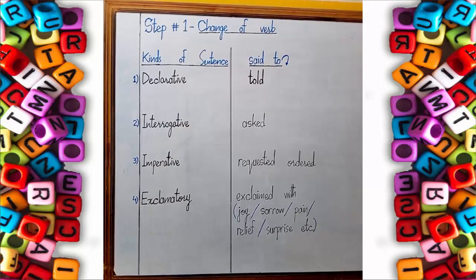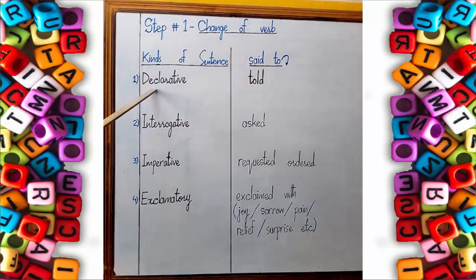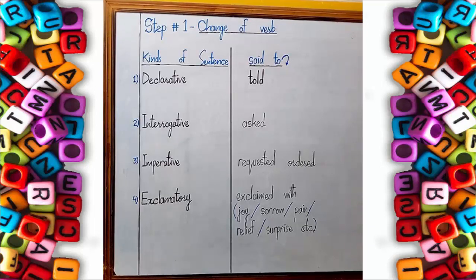Now, Step 1 is change of verb. To understand this step, I will take you back to class six where you studied kinds of sentences. You must remember there are four kinds of sentences in English: declarative sentence, interrogative sentence, imperative sentence, and exclamatory sentence. In order to understand the change of verb, you need to recapitulate these kinds of sentences.